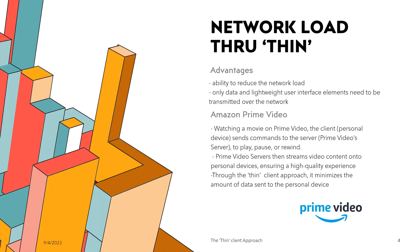One of the significant advantages of the thin client approach is its ability to reduce the network load. Since most of the processing happens on the server side, only data and lightweight user interface elements need to be transmitted over the network. This is especially crucial in scenarios with limited bandwidth or when dealing with mobile devices with potentially unreliable connections. For example, when you watch a movie on Prime Video, the client or personal device sends commands to the Prime Video servers — things such as play, pause, or rewind — and the server then streams the video content to the client's device, ensuring a consistent and high quality viewing experience.